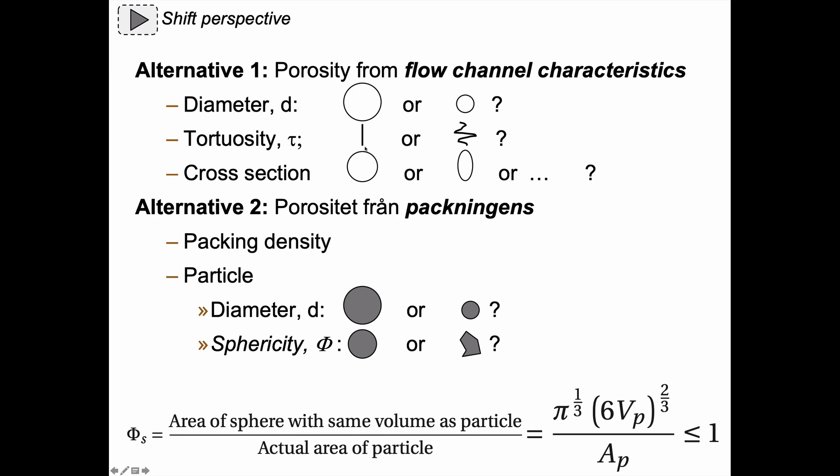That is, does it have a low tortuosity or is it very squiggly, having a high tortuosity? And what does this cross-section look like? Is it a perfect circle, an ellipse, a square or what is it? So that's one way to think of a porous media.